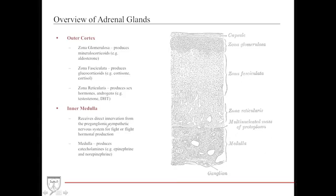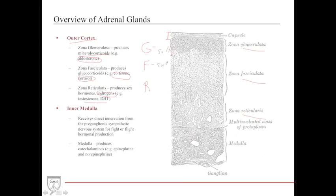The adrenal glands are divided into the outer cortex and inner medulla. The outer cortex has a capsule followed by three zones: zona glomerulosa (G), zona fasciculata (F), and zona reticularis (R). The G zone produces mineralocorticoids like aldosterone; the F zone produces glucocorticoids like cortisol; and the zona reticularis produces androgens like testosterone and DHT. The mnemonic 'salty, sweet, sexy' helps remember these three zones. The inner medulla receives direct innervation from pre-ganglionic sympathetic nerves and secretes catecholamines — epinephrine and norepinephrine — supporting the fight-or-flight response.